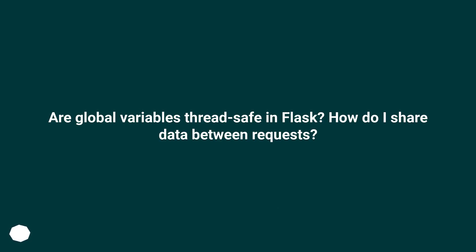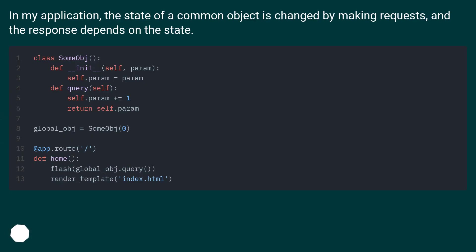Are global variables thread safe in Flask? How do I share data between requests? In my application, the state of a common object is changed by making requests, and the response depends on the state.